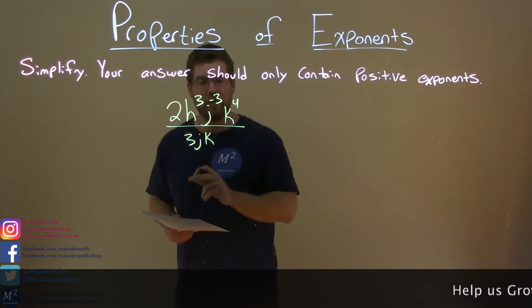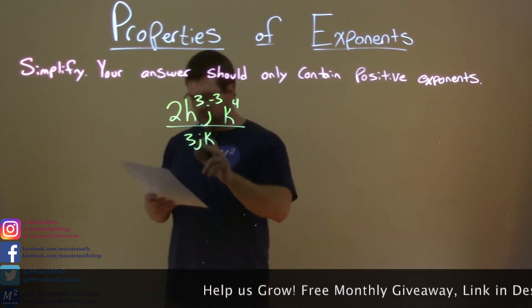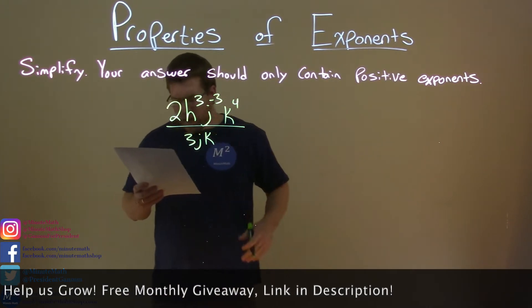2h to the third power, j to the negative third power, k to the fourth power, all over 3jk. I don't know if anyone still does that.